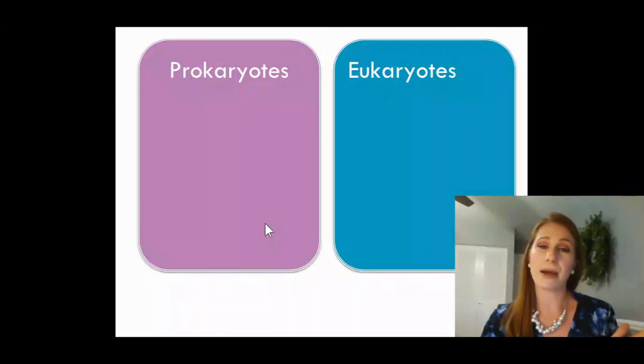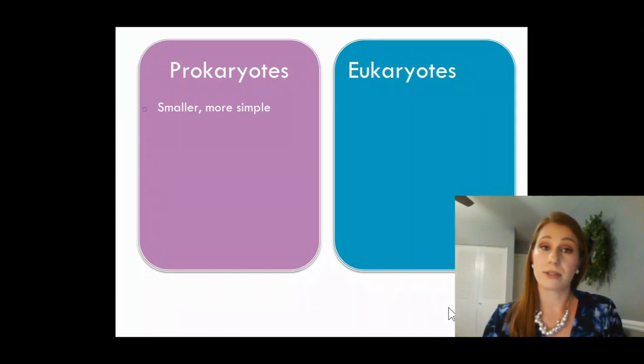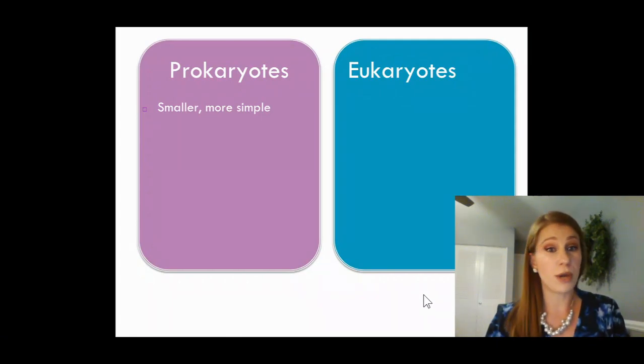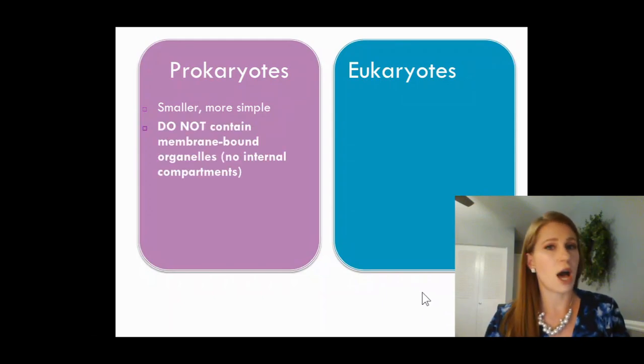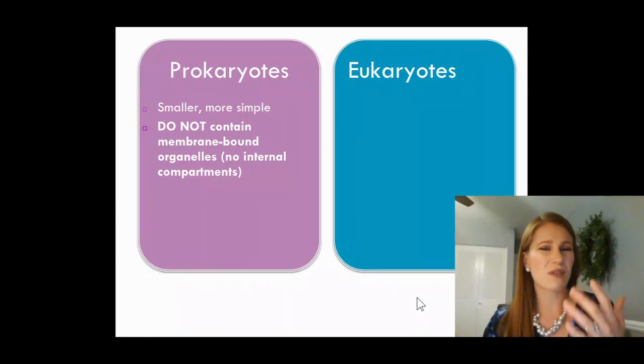Here's another comparison side by side, just in case you're more of a visual person. This may help you a little bit. Prokaryotes are smaller cells, usually about 50 times smaller than a eukaryotic cell. They do not have membrane-bound organelles. Remember, they do have ribosomes, but we're not really counting them in those membrane-bound ones.